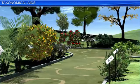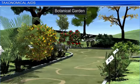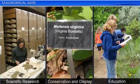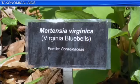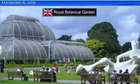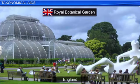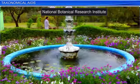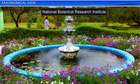Another place that provides taxonomical aid is a botanical garden. A wide variety of plants are cultivated in these gardens for scientific research, conservation, display, and education. Each plant is labeled with its botanical or scientific name and family. Some of the famous botanical gardens are at Kew in England, the Indian Botanical Garden in Howrah, and the National Botanical Research Institute in Lucknow.